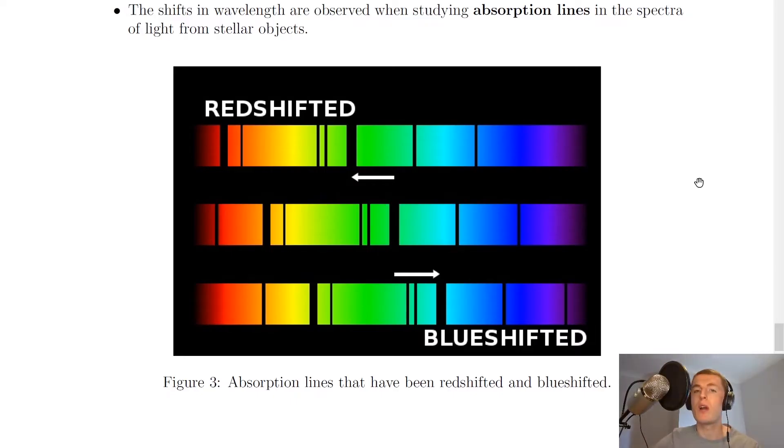And that is what we mean by redshift, whereas the opposite is true for blueshift. So we have the lines this time moving towards the blue end of the spectrum. So this thick line is moved to the right, this line is moved to the right, and so on.